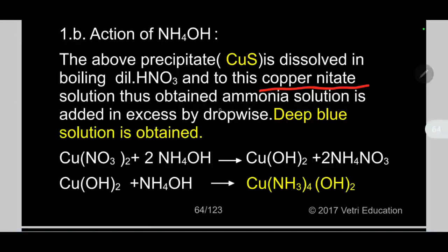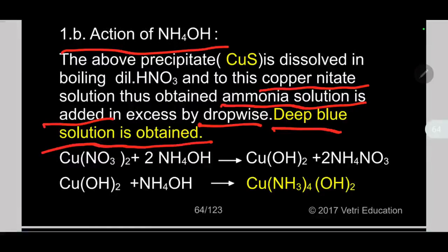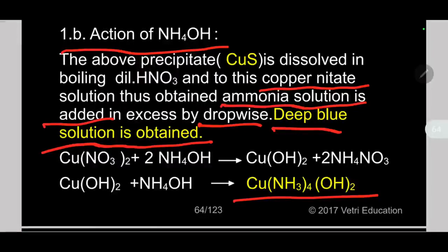Ammonia solution — that is, ammonium hydroxide — is added in excess dropwise. This is the test: the action of ammonium hydroxide. When you treat ammonium hydroxide with the copper sulfide precipitate obtained in the first test, a deep blue solution is obtained. This is due to the complex Cu(NH3)4²⁺SO4.